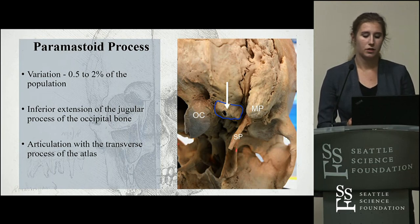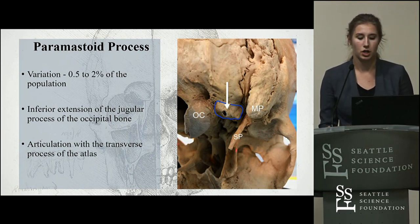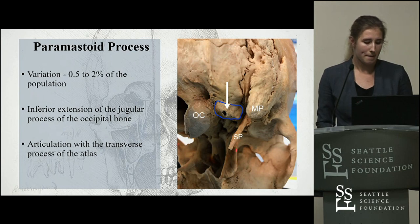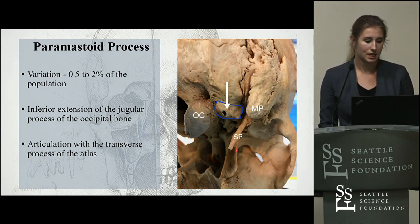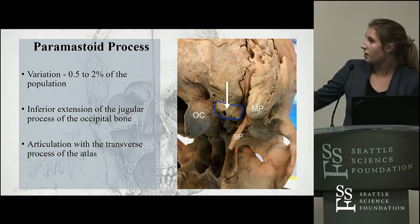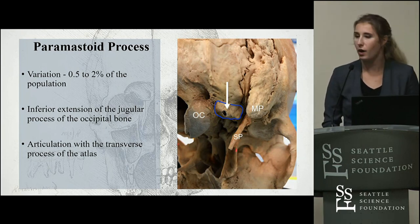The paramastoid process is the inferior extension of the jugular process on the occipital bone. It is lateral to the occipital condyle, medial to the mastoid process, and when the paramastoid is present it is flanked medially by the occipital artery. In the photo, the outline and arrow point to the paramastoid process.